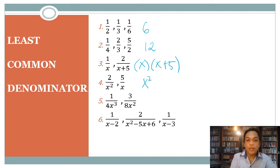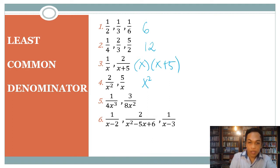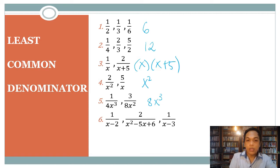For number five, we have one over four x cubed and three over eight x squared. Eight cannot divide four, but four can divide eight, so for the numerical coefficient we have eight. For the variable, we use x cubed. So our LCD is eight x cubed.